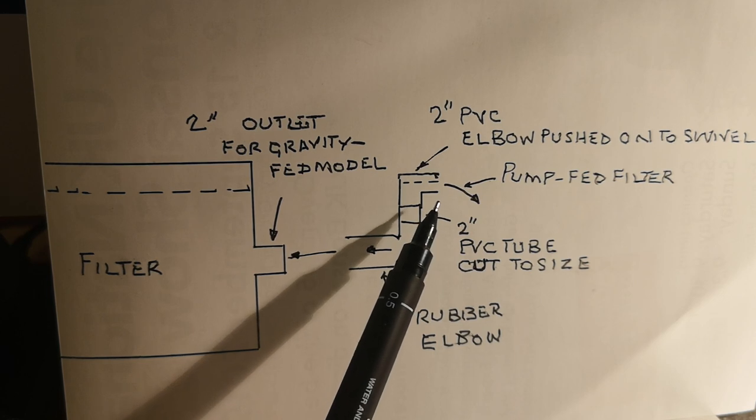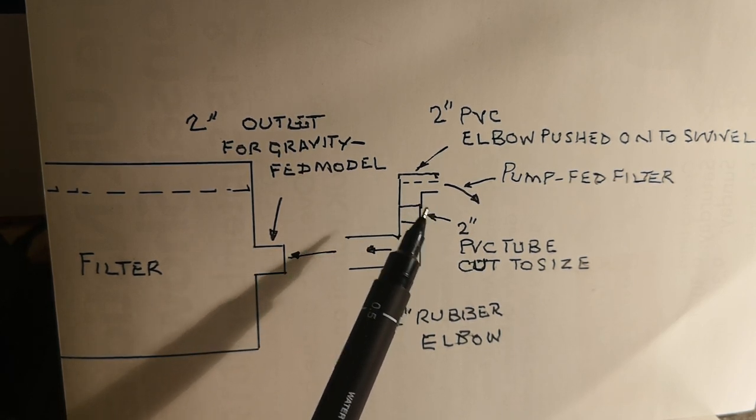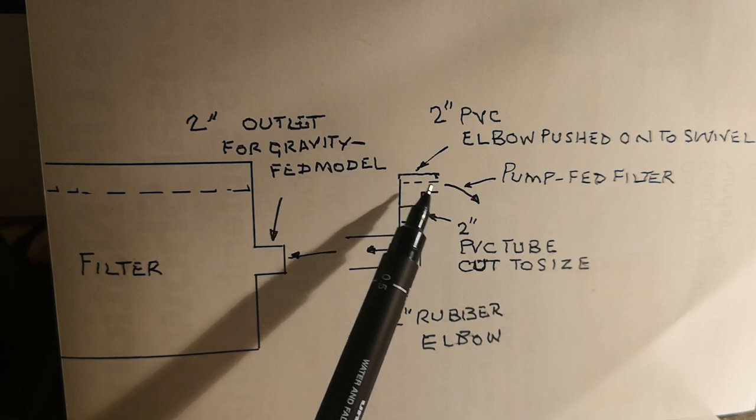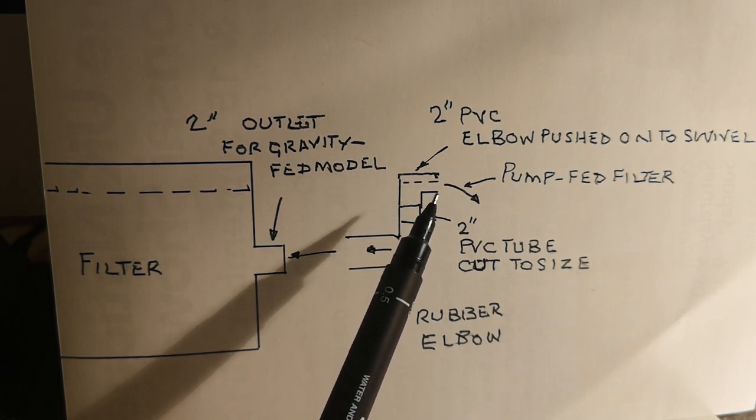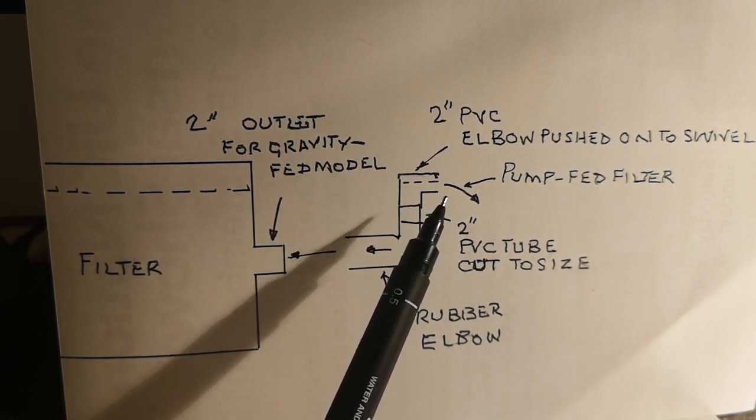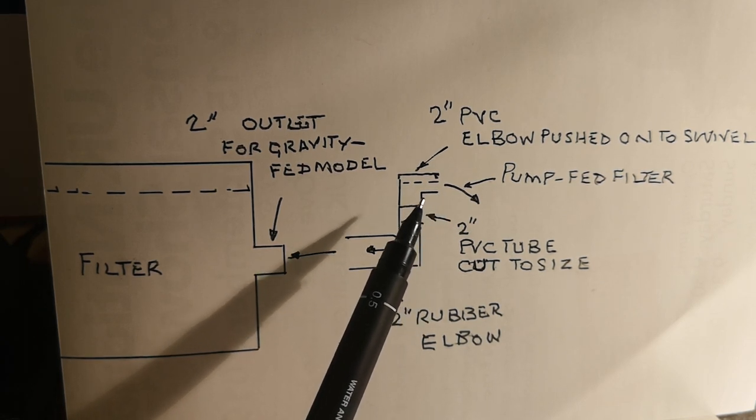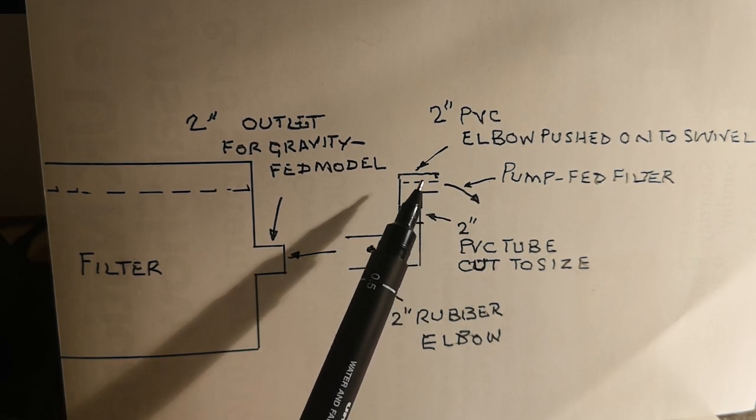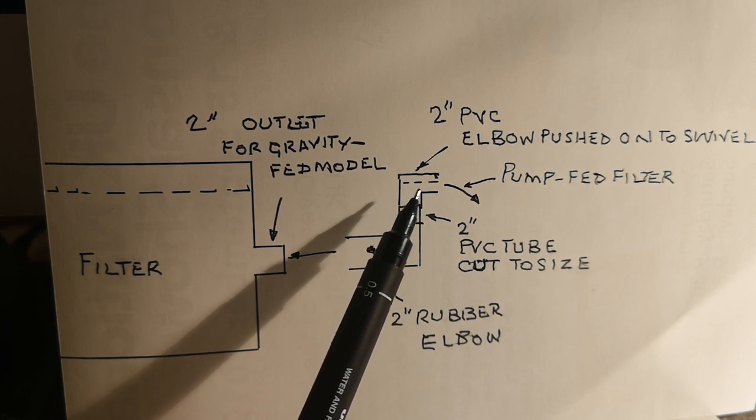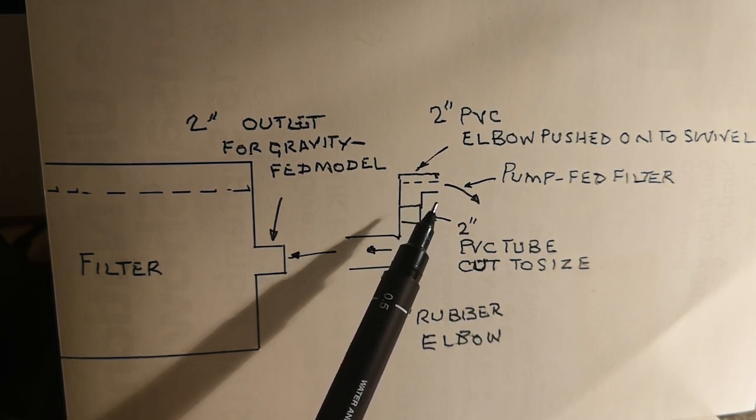Now this 90-degree elbow is only pushed on, it's not glue-fit, so it means it can be swiveled from left to right in any direction you wish to take it, so it doesn't interfere with any other outlets on the return to the pond.